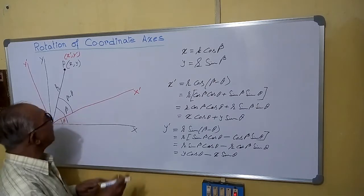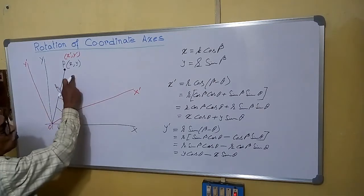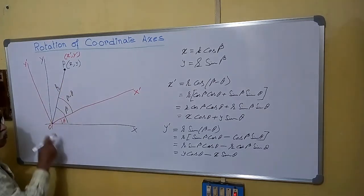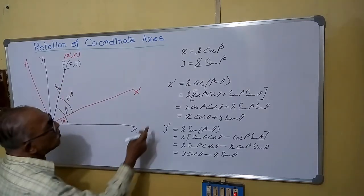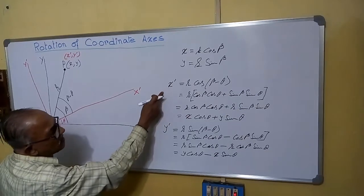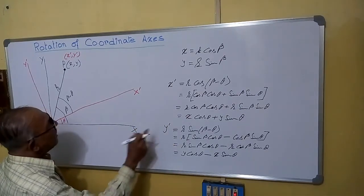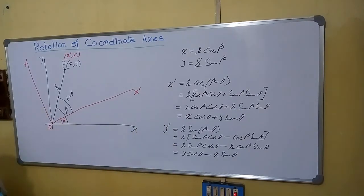If x and y are known to us and theta is also known to us, we can easily find x-dash and y-dash. This will be the relation.